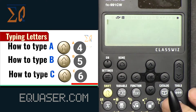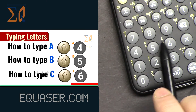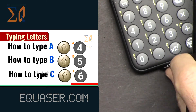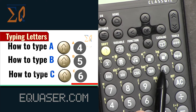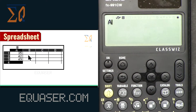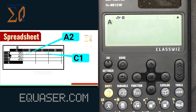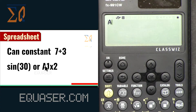To type A, B, or C on the screen, press ALPHA and then the corresponding key. The golden-colored letters are accessed with ALPHA. You can also enter X and Y. This cell is called A2 — A from the top and then row 2. This cell is called C1. If you enter 7 plus 3, that's a constant. You can also enter sin(30) or A1 times 2, where A1 times 2 means the value of cell A1 multiplied by 2.